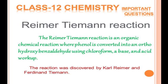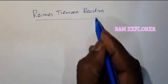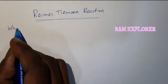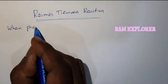The Reimer-Tiemann Reaction is an organic chemical reaction where phenol is converted into an ortho-hydroxy benzaldehyde using chloroform, a base, and acid workup. The reaction was discovered by Carl Reimer and Ferdinand Tiemann.